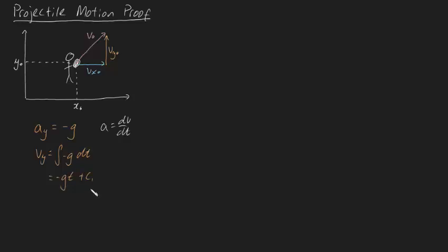Now how do we find the integrational constant? Well, we need to use initial conditions. We know that vy, that's our velocity of our ball in the y direction, is equal to vy0, that's our initial vertical velocity, when t is equal to zero. This is our initial condition.